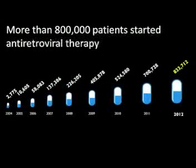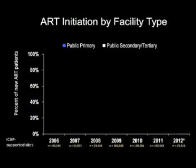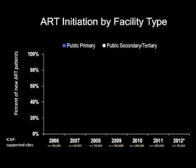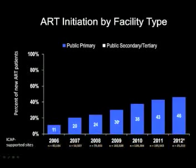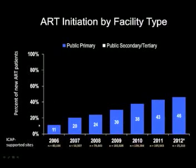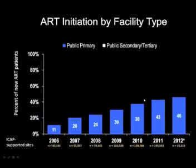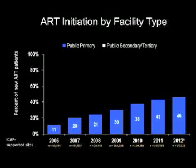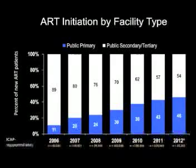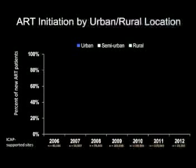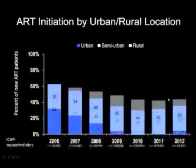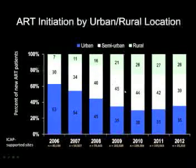More than 800,000 have started life-saving antiretroviral therapy. Have we been successful in decentralization and reaching people where they are? Starting from 2006 to 2012, the proportion of antiretroviral therapy initiations at primary healthcare facilities — smaller facilities usually in more remote areas — increased from about 10% to almost half of all initiations. Meanwhile, secondary and tertiary facility initiations are decreasing. Looking at urban versus rural, urban is decreasing over time while rural areas see an increase in antiretroviral therapy initiation. This is what you want to achieve coverage and equity.